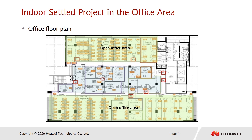The second part consists of small meeting rooms and small independent office areas in the middle of the floor plan. One AP can cover one room or even two or more rooms. The third part includes the corridor, elevator lobby, staircase, and washroom. For these areas, we need to determine whether to separately deploy APs for coverage, and if yes, determine the distance between APs.